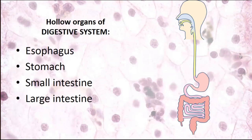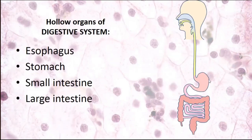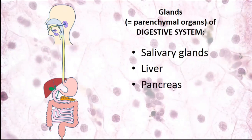Examples of hollow organs in the digestive system include the pharynx, esophagus, stomach, small intestine, and large intestine — forming the digestive tract, a hollow tube-like structure. Systems may have both types of organs: hollow organs such as the digestive tract, and glandular or parenchymal organs such as the salivary glands, liver, and pancreas, which are solid organs without a lumen.